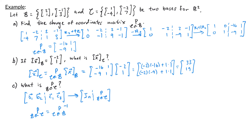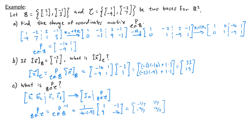So we take the inverse of the 2x2 matrix found in part a. That's 1 over the determinant — which is (-16) - (-9) = -7 — times the matrix where we swap the diagonal entries and negate the off-diagonal entries: [1, -1; 9, -16]. This gives P_{C→B} = [-1/7, 1/7; -9/7, 16/7].